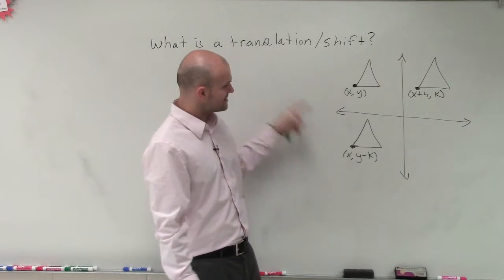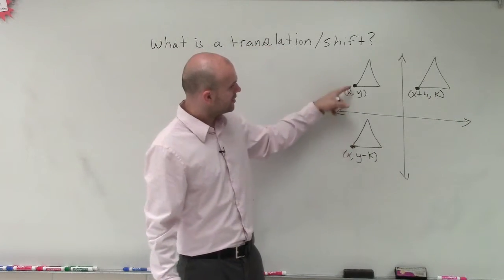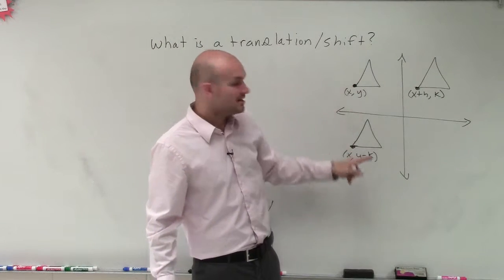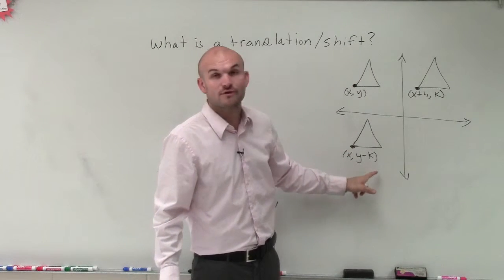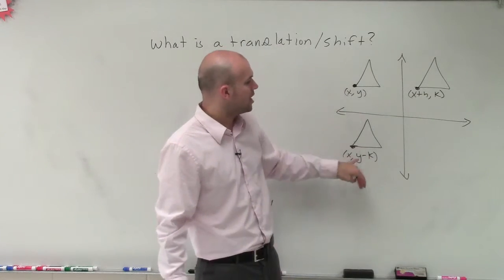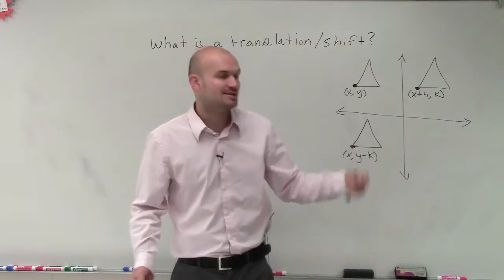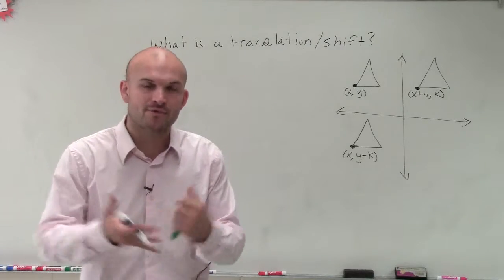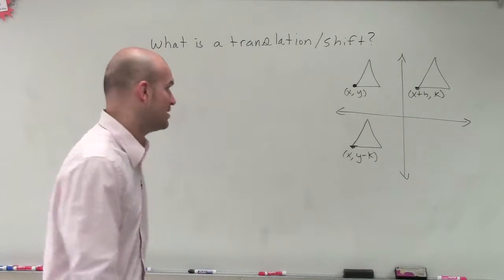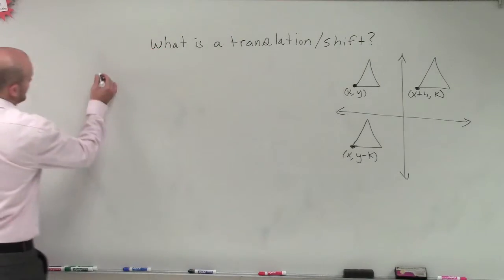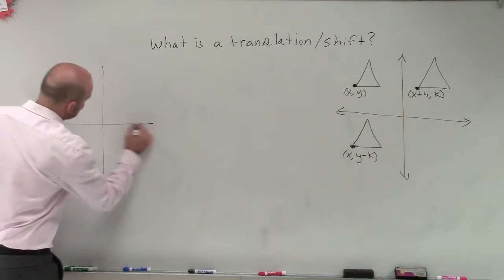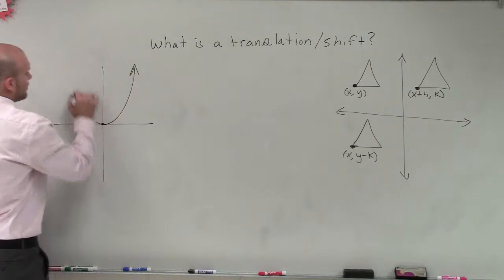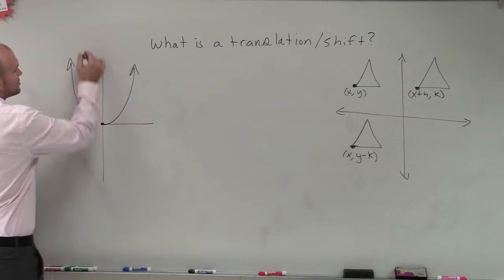When I shift down, I'm going to be subtracting — whatever I'm shifting is going to be subtracted from my y. And if I was going to go up, it would be y plus k. H and k are just variables represented by numbers. What we're going to be talking about is how we transform our parent graph just by looking at our equation.